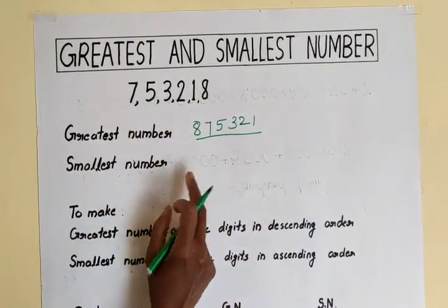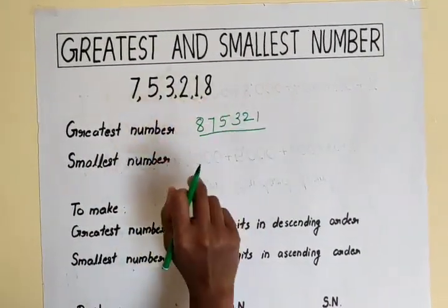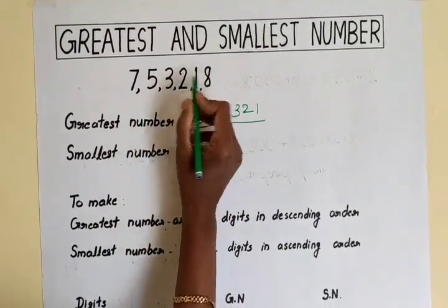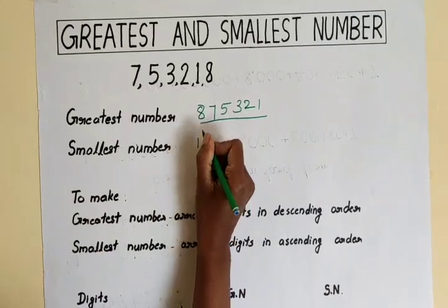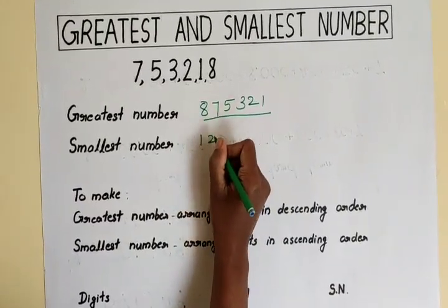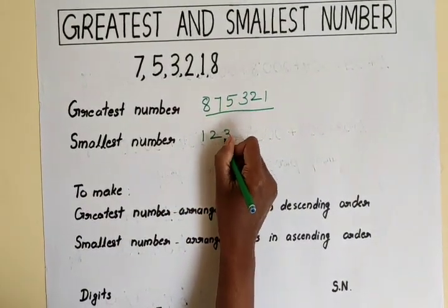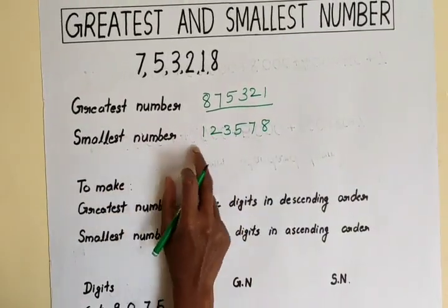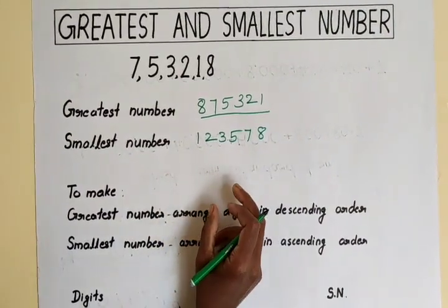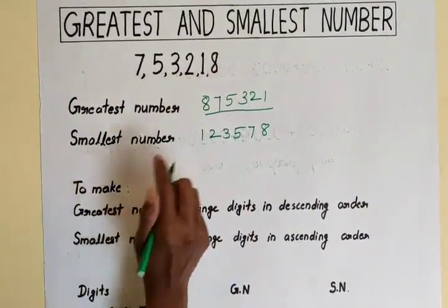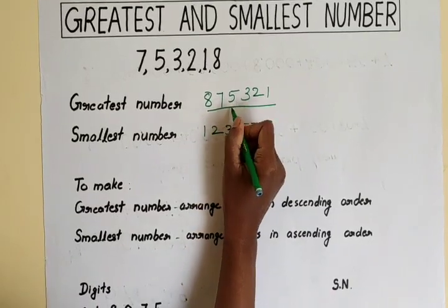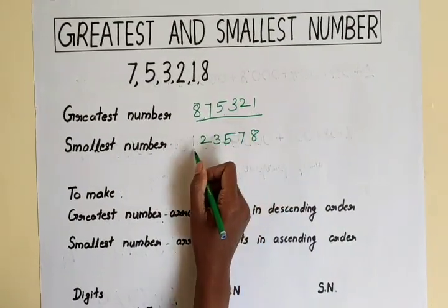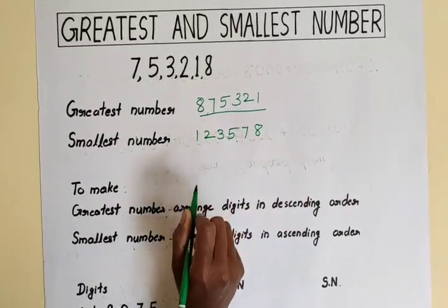For the smallest number, we arrange these digits in ascending order — that means from smallest to greatest. What is the smallest digit among these? 1, next 2, next 3, next 5, 7, 8. So this is the smallest number that we can make using these 6 digits. The greatest number is 8,75,321 and the smallest is 1,23,578.